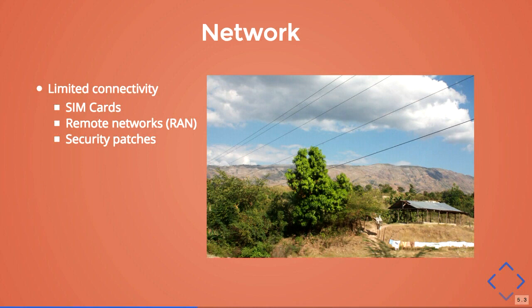The second problem is network and internet connectivity — something we take for granted but is not available in these places. If you don't have electricity, chances are you don't have internet. In several places, the only internet available is using SIM cards. In some countries, providers even sell a service called RAN — Remote Access Networks — which is like a VPN of SIM cards: you buy four SIM cards that can only talk to each other, not connected to the internet, but with some limited connectivity. Of course, if you're using SIM cards for all your connectivity, you can't just go and update your operating system. There's no way of someone updating their Ubuntu or Windows overnight — that's simply not possible.